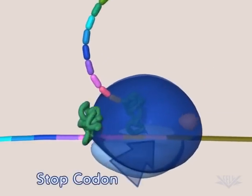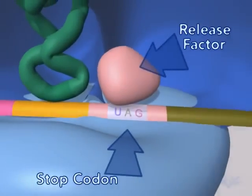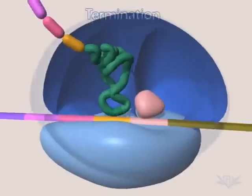When a stop codon is encountered in the A-site, a release factor enters the A-site and translation is terminated.